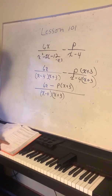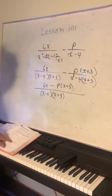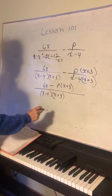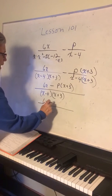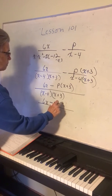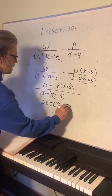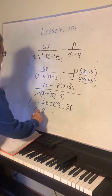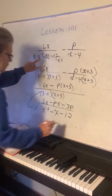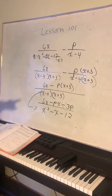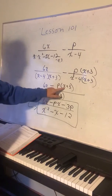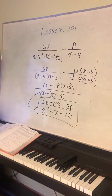On top we have 6x minus p times (x plus 3). We distribute: 6x minus px minus 3p. They want the bottom written back as x squared minus x minus 12. The most correct final answer is 6x minus px minus 3p over x squared minus x minus 12, and that's as far as you can go with that.